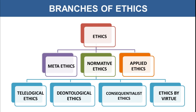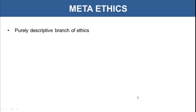Coming to branches of ethics — ethics has been divided into three major parts: metaethics, normative ethics, and applied ethics. Normative ethics is further divided into teleological ethics, deontological ethics, consequentialist ethics, and ethics by virtue. We will see what all these mean one by one. Metaethics is a purely descriptive branch of ethics.